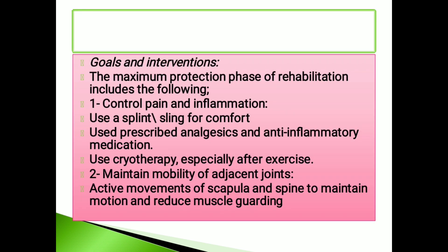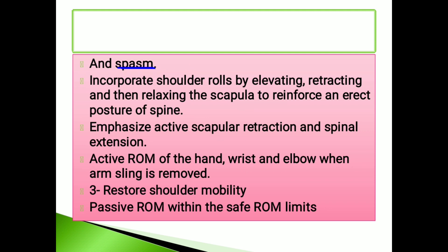Goals and interventions for the maximum protection phase include: first, control pain and inflammation — use a splint or sling for comfort, use prescribed analgesic and anti-inflammatory medication, and use cryotherapy (ice therapy) especially after exercise. Second, maintain mobility of adjacent joints through active movement of the scapula and spine to maintain motion and reduce muscle guarding and spasm.